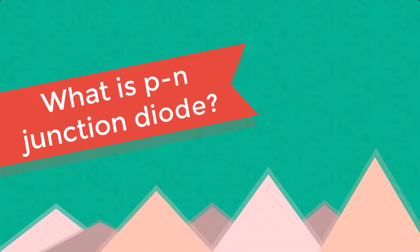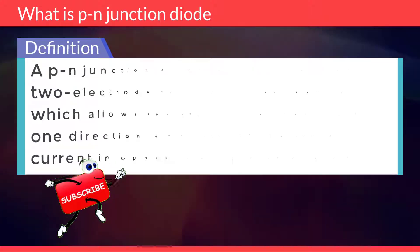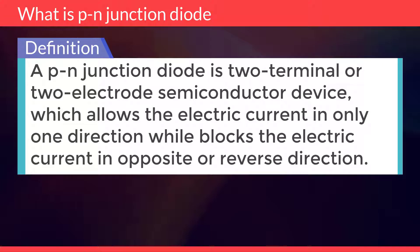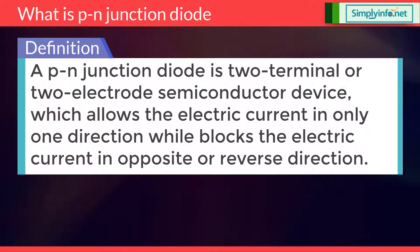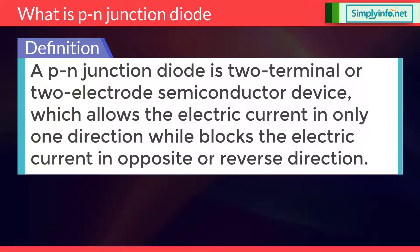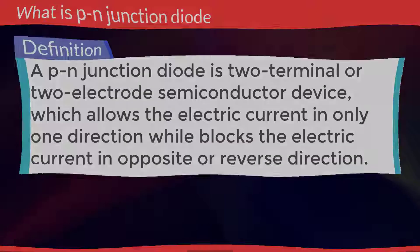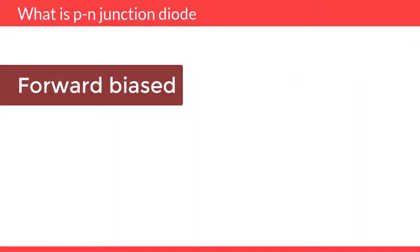What is PN Junction Diode? A PN Junction Diode is a two-terminal or two-electrode semiconductor device which allows electric current in only one direction while blocking the electric current in opposite or reverse direction.